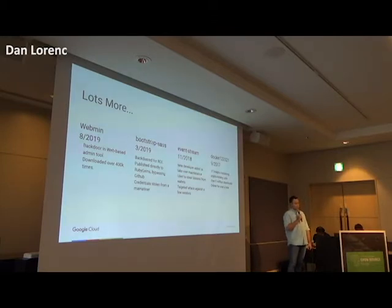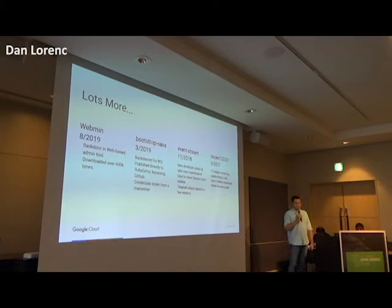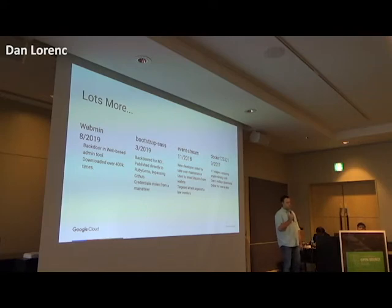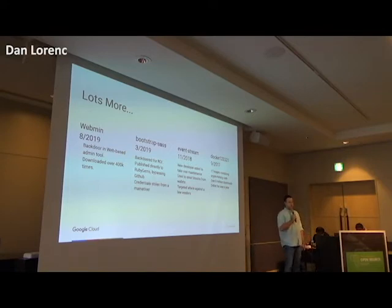There are lots more examples. Bootstrap SAS is one of the biggest — a very popular Ruby library. The committers themselves did nothing wrong; one of them had their credentials stolen. An attacker used those credentials to upload a new release to RubyGems containing code that was never actually checked into GitHub. So even if you reviewed the code line by line in the repository, you still would have missed it. The supply chain for these packages has many different points where vulnerabilities can be injected.